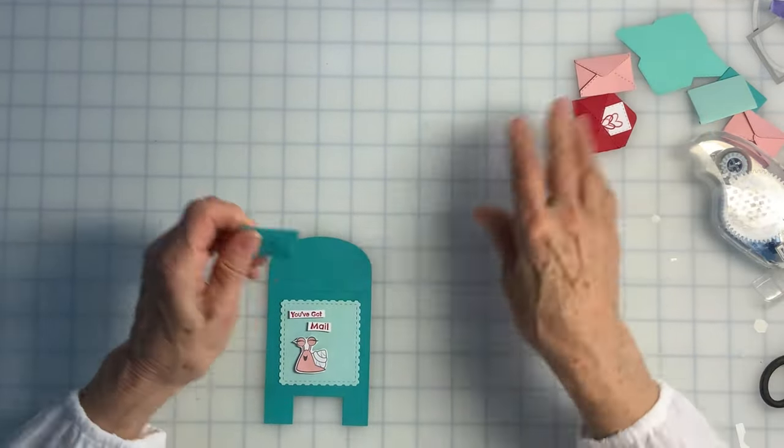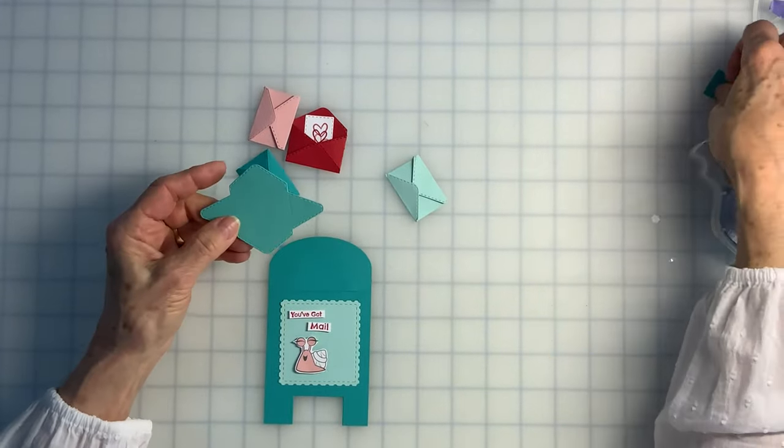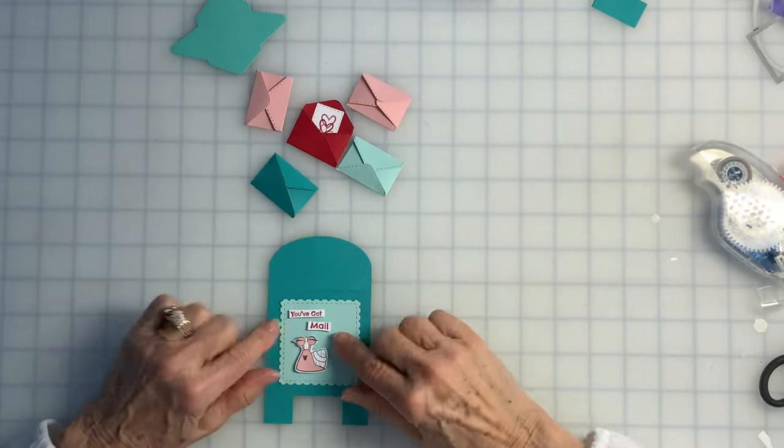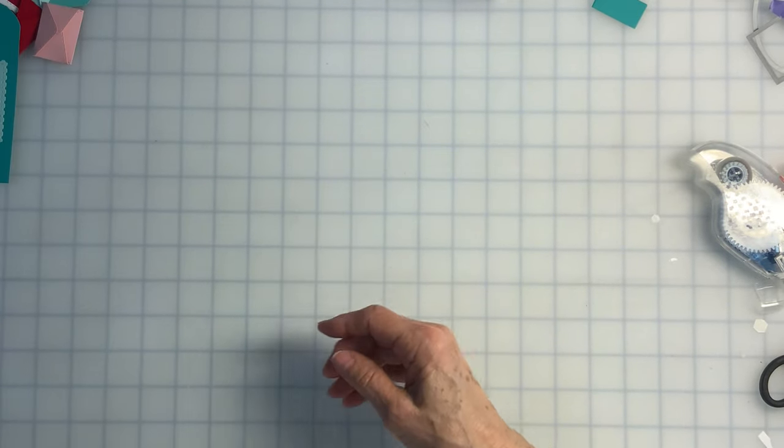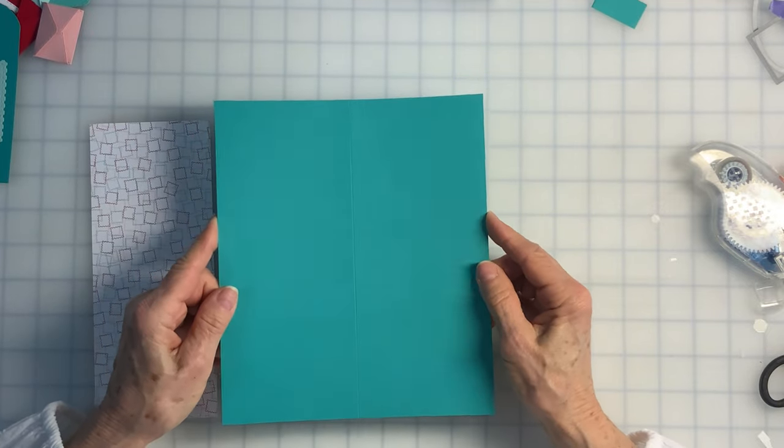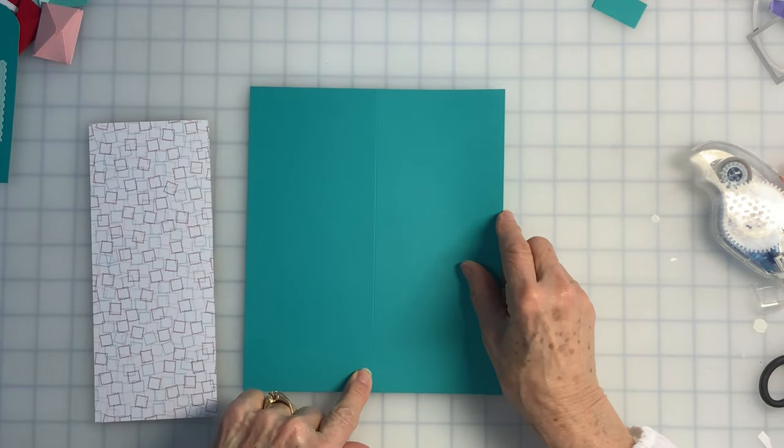So now it's time to arrange my envelopes coming out of the mailbox. You know, before I do that, I think I want to affix this to the card front. My card base is a slimline card base. I cut this 7 1/2 by 8 3/4. It's scored at 3 3/4.